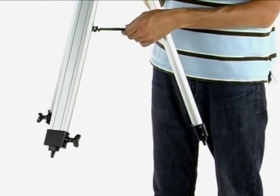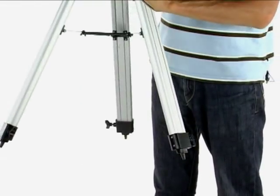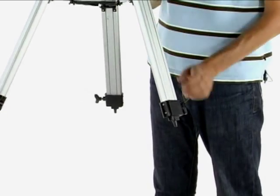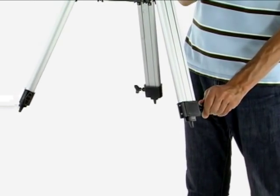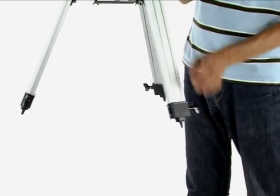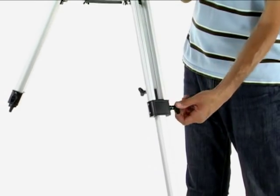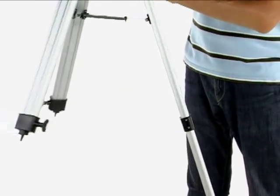Now that we have the tripod bracket in place locked in, what we're going to do is release the legs themselves. There's threads right here. And tighten it to lock it.